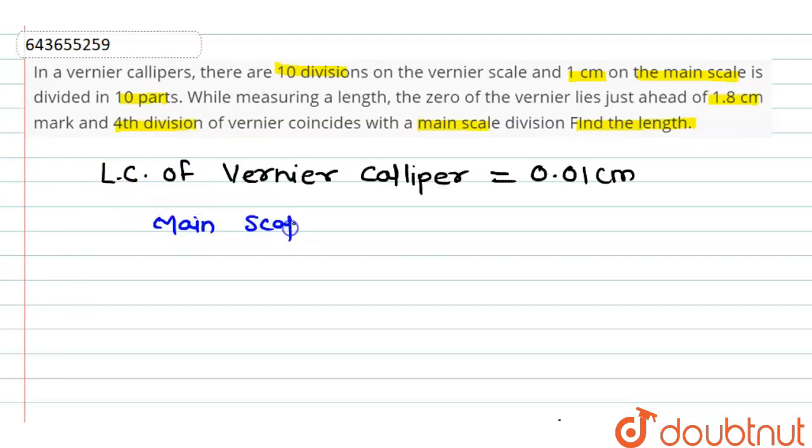The main scale reading is 1.8 centimeter and the fourth division of Vernier scale coincides with main scale. Hence, we can say that Vernier scale reading